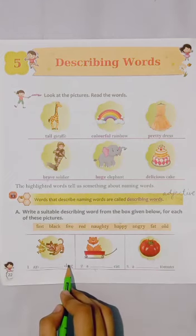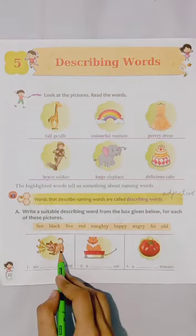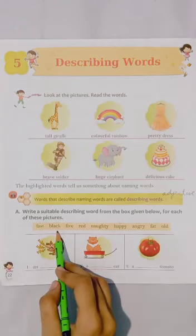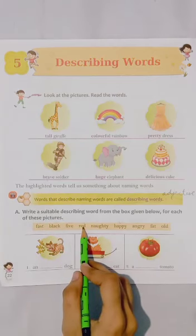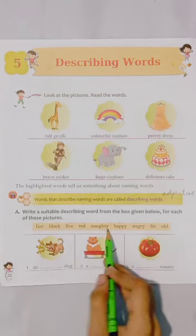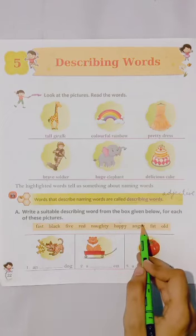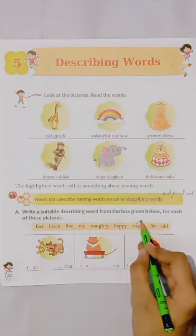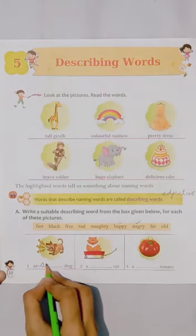A dash dog. See how the dog is. Dog kaise hai? Fast? No. Black? No. Five? No. Red? No. Naughty? No. Happy? No. Angry? Yes! The dog is angry. Angry means gusse mein.